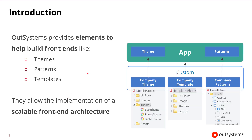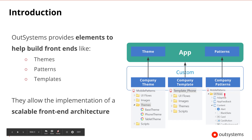OutSystems provides elements to help build frontends like themes that define the look and feel of our apps, which include screen layouts, the global style sheets, and grid definitions. Then patterns of frontend implementations like carousels, calendars, and many others. And templates that define the starting look and feel of apps, which include the themes and the patterns and other common functionality. These elements allow the implementation of a scalable frontend architecture.